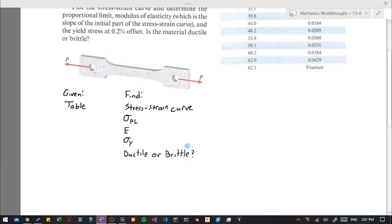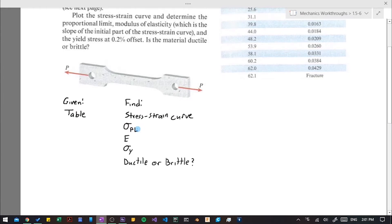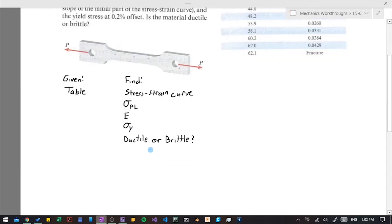Alright, so I am using sigma PL for the proportional limit and sigma Y for the yield stress. So now we need to draw our single underline.